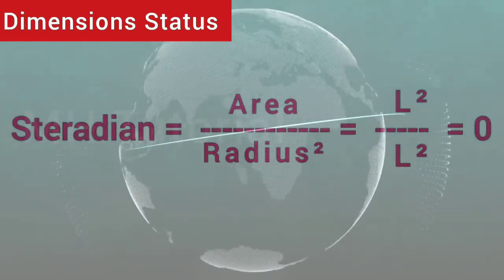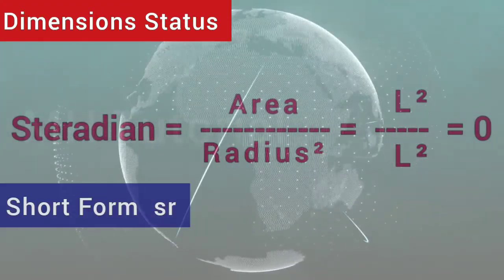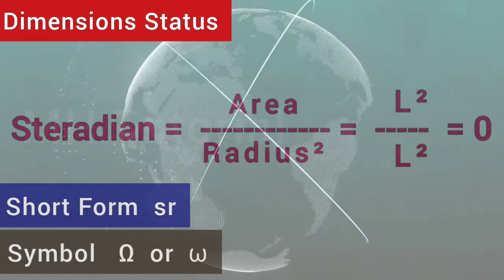Steradian is a zero-dimensional unit. It is expressed in SR and denoted in Greek alphabet Omega.